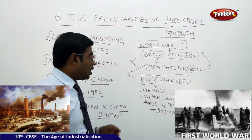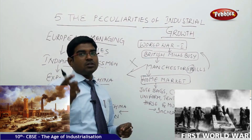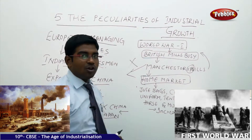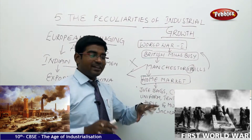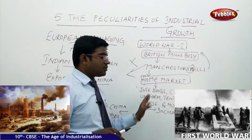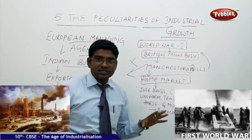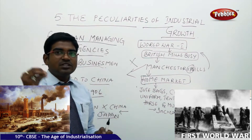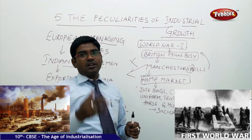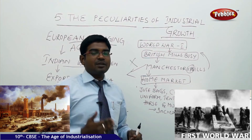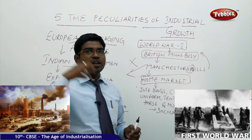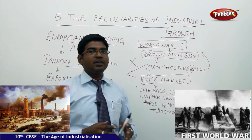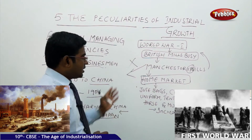Along with this, the British gave a call to Indian factories to supply for the war: jute bags, cloth, uniforms, tents, leather boots, horse and mule saddles. This gave a boom to Indian industries to expand on a very large scale. Indian merchants started to establish more factories and three-shift work began, with Indian workers made to work long hours. That is how production increased — the boom of World War One created a very large-scale market for Indians in a positive manner.